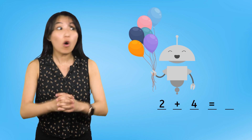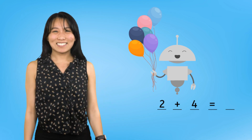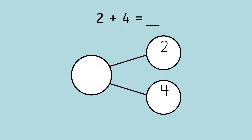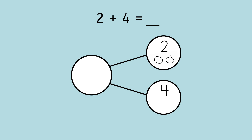We can use a number bond to help us find the answer. One of our parts is two, and the other part is four. I can draw quick math pictures to help us find the answer — two in this part, and four in this part. Now, to find the whole, we need to count both parts together: one, two, three, four, five, six.